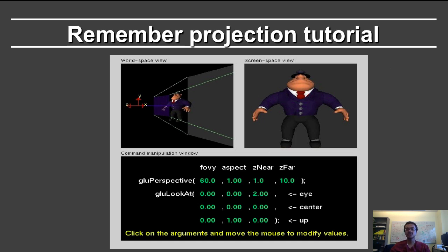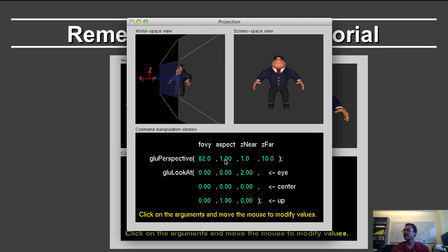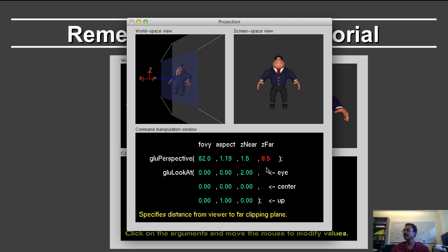Let's go back to the projection tutorial. We'll notice here the GLU perspective has four commands. GLU LookAt below has eye, center, and up, we already saw this. And again, you can increase the field of view, you can play with the aspect ratio, you can change the near clipping plane, you can change the far clipping plane. So, what are all of these different variables, and how do they affect the GLU perspective matrix?